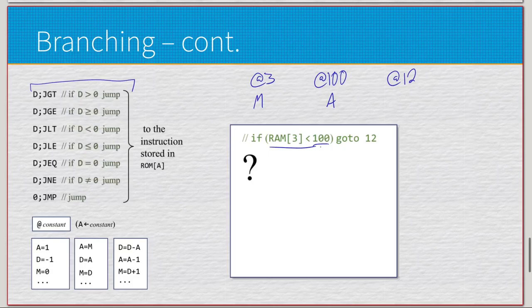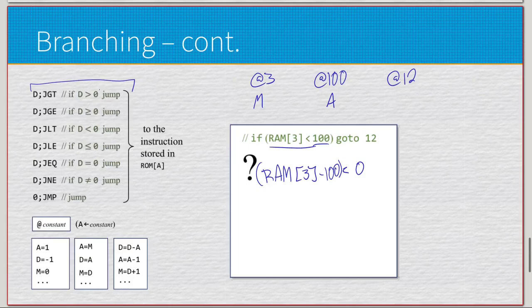Now we have RAM[3] minus 100 is less than zero. That gives us the comparison to zero. We just need to store this value into D, which would give us the form of D is less than zero. We can tell we're going to want to do D;JLT eventually. Let's get this math dealt with first. I'm going to do it with a subtraction, placing priority on that part.